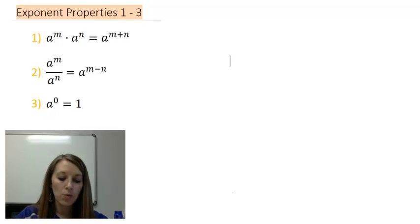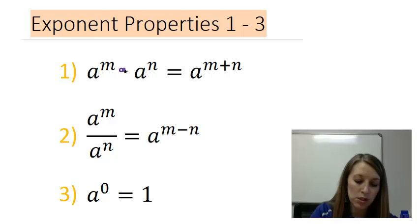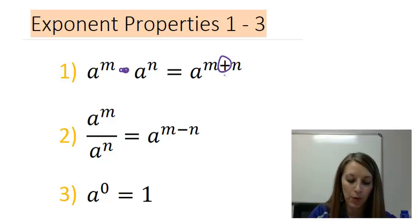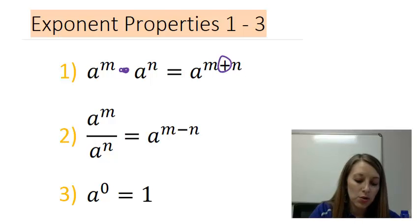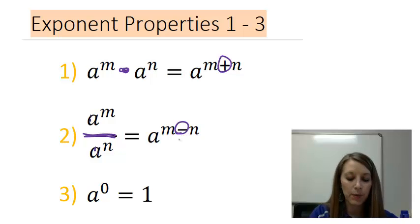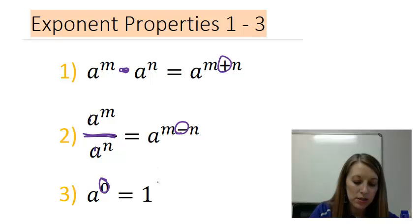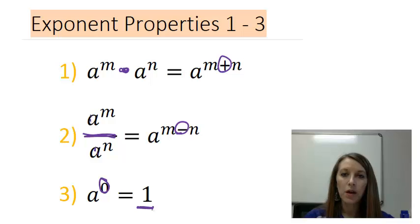In property 1, when we have the same bases and we multiply our exponents, that translates to an addition in the exponent. In property 2, when we divide the same bases, that translates to a subtraction in the exponent. And in property 3, we prove that anything to the 0 power will always simplify to be 1.